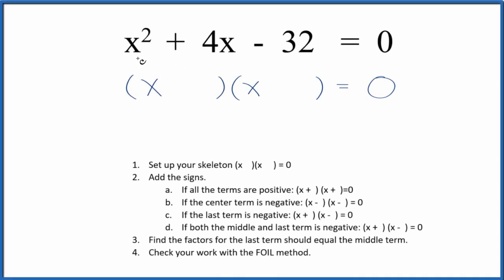If you need to factor the equation x squared plus 4x minus 32, here's how you do it. First off, we'll use these guidelines to help us figure this out. What we need to do is set up a skeleton equation like this here.